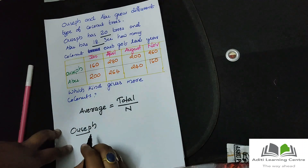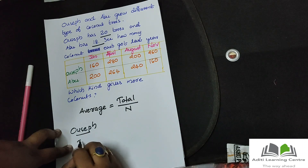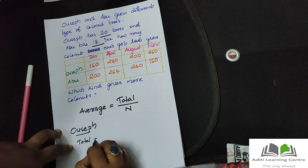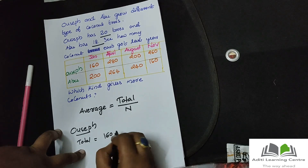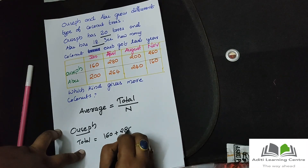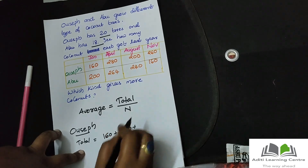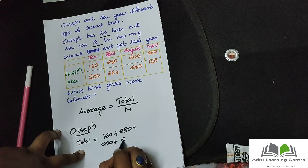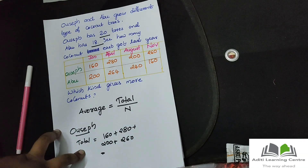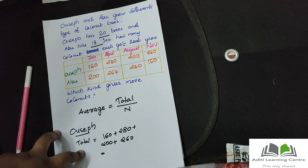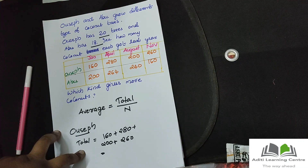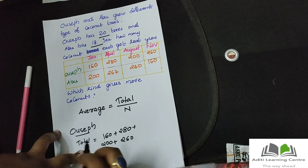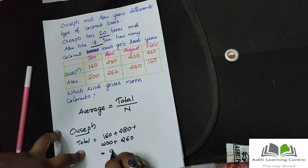Total is equal to 160 plus 280 plus 200 plus 260. Total equals 900.